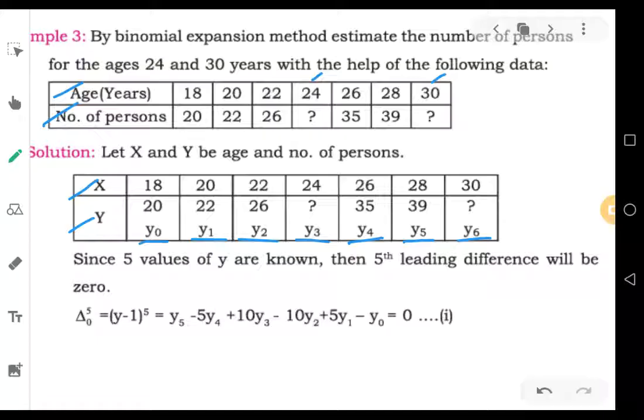So, we will write the number of y numbers. Now, we have to look at y numbers. The number of y numbers is what is the number of known values. In this table, we will count as many values in this table. 20, y0, y1, y2 is known as 3, y4 is known as 4, y5 is known as 5. That means we know 5 values, 1, 2, 3, 4, 5.